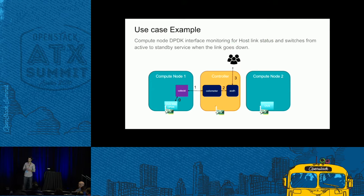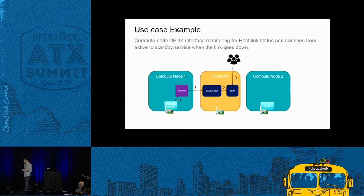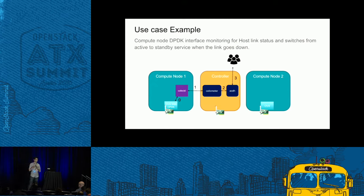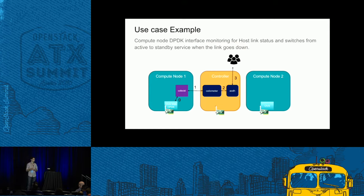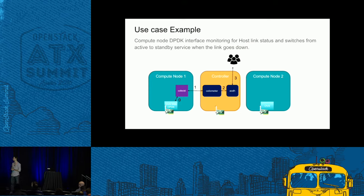In an OpenStack deployment we have controller nodes, many compute nodes, networking nodes, and more. What we want to do is monitor the network — physical resources and also virtual resources using DPDK. We will collect a lot of metrics and samples and push them to the cloud controller. Based on that we can make intelligent decisions, detect failures happening on the network side, and get performance metrics.